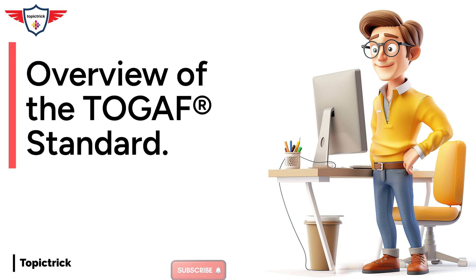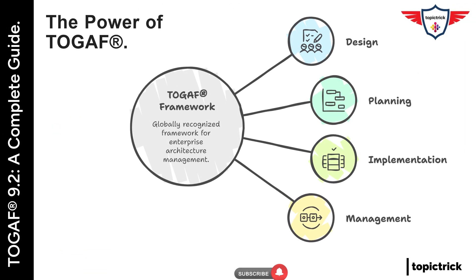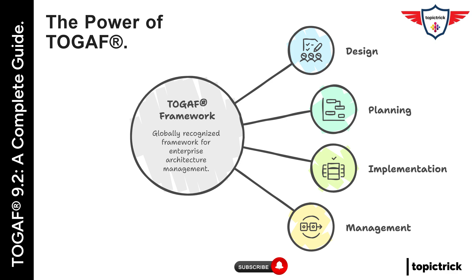What if I told you there's a globally recognized framework that helps organizations design, plan, implement, and manage their enterprise architecture efficiently? A framework that's been adopted by some of the world's biggest tech players, from banks to software giants, to bring clarity and consistency to their transformation journeys. That framework is TOGAF, and today we're diving deep into what it is and why it's a game changer for enterprise architects.